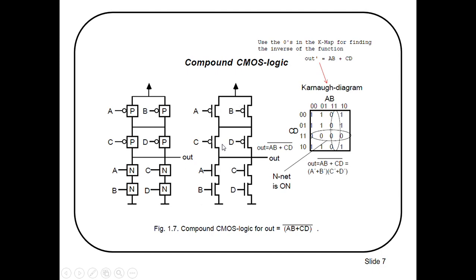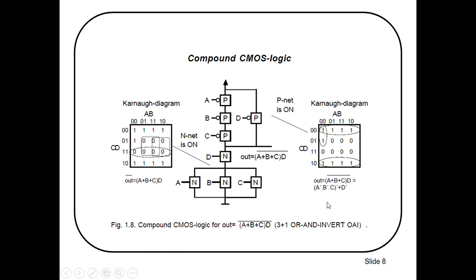Let's discuss another example: implementing the function (AB + C·D)'. We start with the pull-down network using NMOS transistors. A, B, and C are in parallel, and this whole combination is in series with D in the pull-down network. In the pull-up network, A, B, and C come in series, and this whole combination comes in parallel with the D transistor, using PMOS transistors.